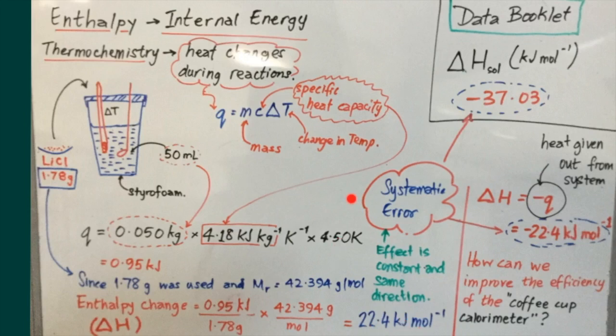Matching this value against the stated value in the IB chemistry data booklet of 37.03, we note that there is a significant difference between the two values. This of course is due to the built-in error in our calorimeter, our coffee cup calorimeter, which is certainly not an isolated system and energy can be released from the system.